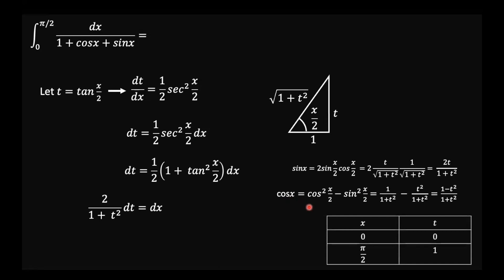Now looking at the limits: when x equals 0, t equals tan(0/2) which is tan(0), so t equals 0. When x equals pi over 2, t equals tan(pi/4), which is 1. So the lower limit becomes t equals 0 and the upper limit becomes t equals 1.